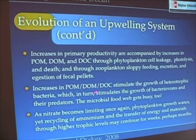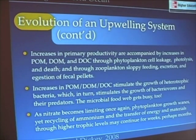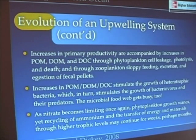It's those increases in POM, DOM, and DOC that stimulate the growth of bacteria. In turn, that stimulates the growth of bacterivores and predators, and so the microbial food web gets going as well.